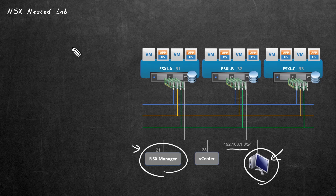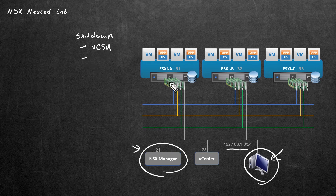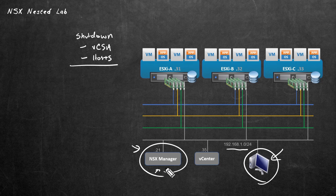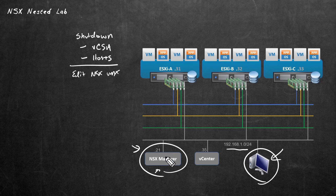Here's what I'd like to do: walk you through how we can do a graceful shutdown of our nested lab environment. The shutdown process would be a graceful shutdown of the nested vCenter environment, and then a graceful shutdown of ESXi A, B, and C. Once we've walked through the graceful shutdown, the second thing I'd like to walk you through is to edit the VMX file for the NSX manager — it's currently powered off — to specify that we want to allow at least one or two snapshots on that VM.